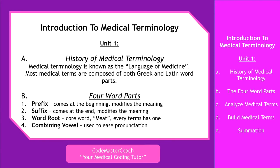The four word parts for medical terminology are: Prefix, which comes at the beginning of a word and modifies the meaning of that word. Suffix comes at the end and modifies the meaning of the word. The word root is the core word — it is the meat, and every term has a word root. And then your combining vowel, which is used to ease pronunciation.